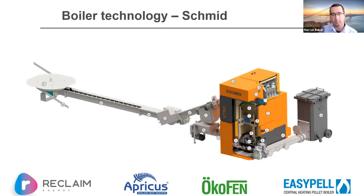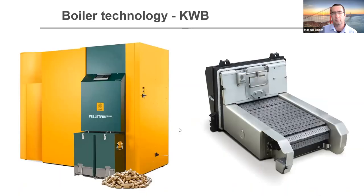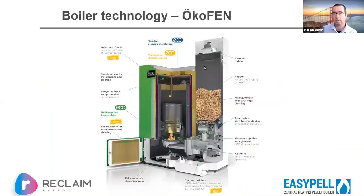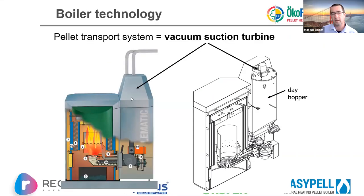Schmid and KWB both tend to use auger-fed rather than vacuum-fed systems. All of them have similar combustion chambers with recirculation and heat exchanging. The Ökofen boiler has a variety of aspects that are quite specific and unique to it.